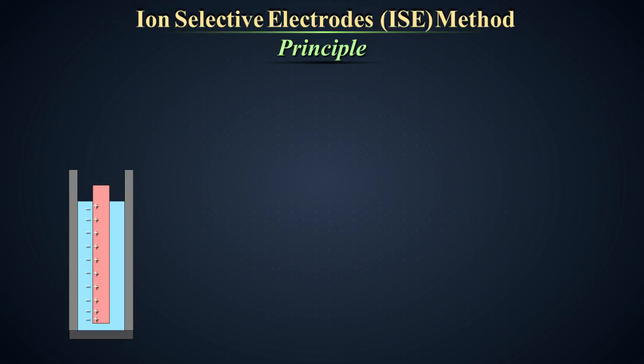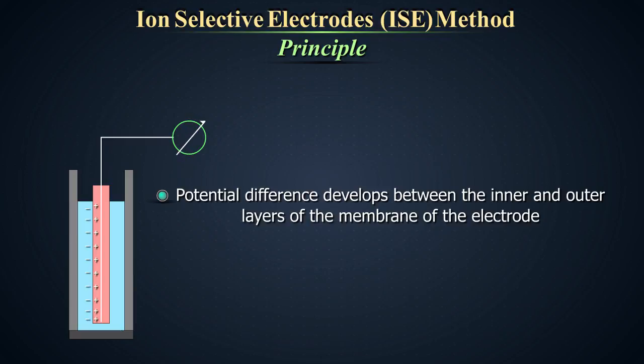Principle: A potential difference develops between the inner and outer layers of the membrane of the electrode which is related to the ionic concentrations of the solution. The voltage is theoretically dependent on the logarithm of ionic activity according to the Nernst equation.